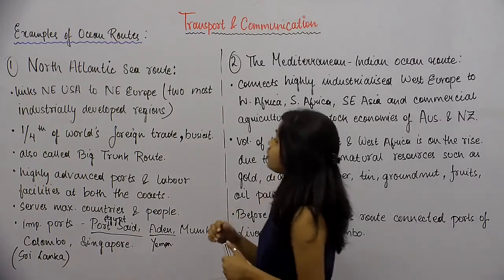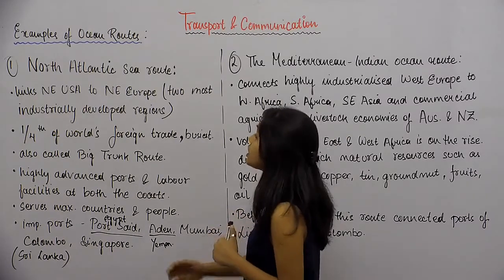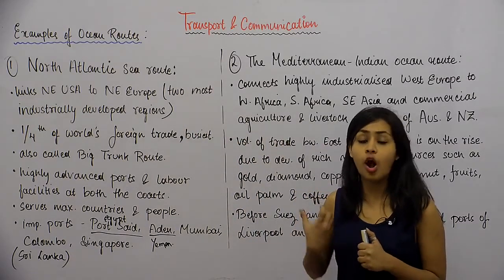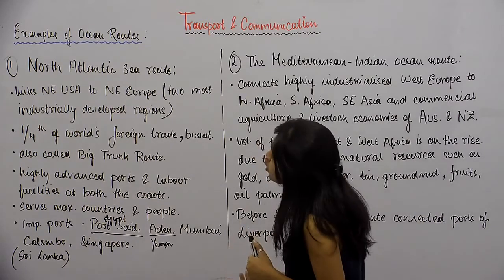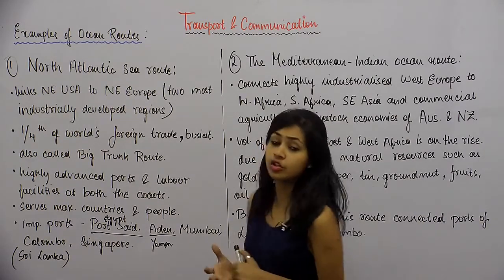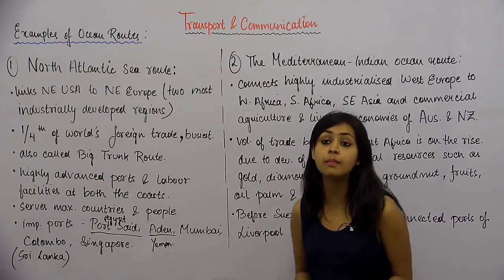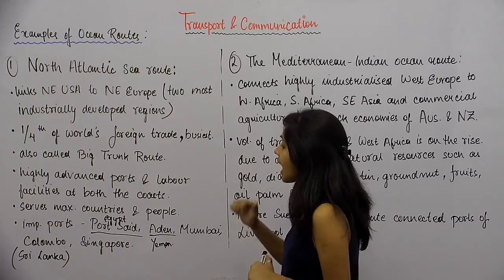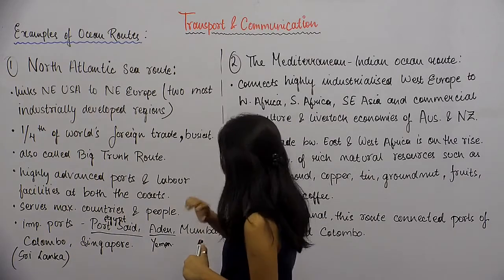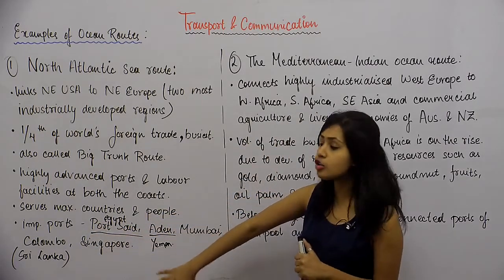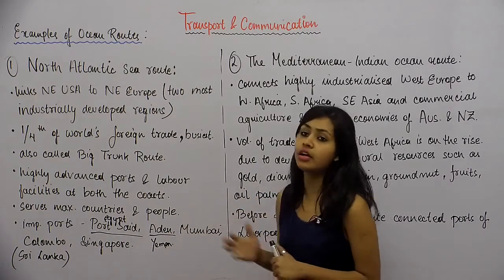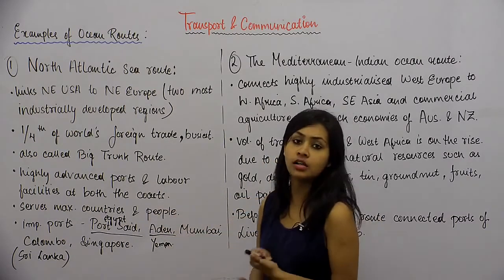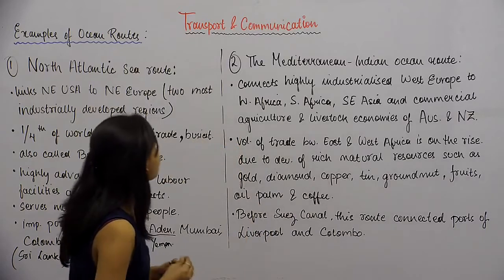To summarize: the North Atlantic Sea Route links North Eastern USA to North Eastern Europe, the two most industrially developed regions. One-fourth of the world's foreign trade happens across this route. It is also called the Big Trunk Route and has highly advanced ports and labor facilities at both ends. Remember the ports that fall along this sea route.